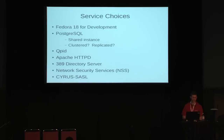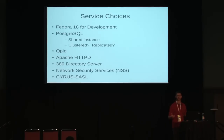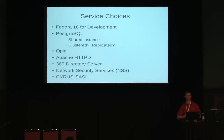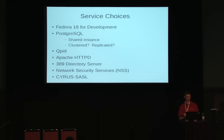The service choices: I do my development on Fedora 18. I'm a Postgres bigot — I like Postgres as a database, and in this case it also happens to be the one that supports Kerberos. I use Qpid as my queue deployment mechanism, because of the SASL and Kerberos support. If possible, and certainly for Keystone, I like Apache as the web server — again, Kerberos support there. The 389 directory server as mentioned before, NSS for cryptography, and then Cyrus SASL libraries — that's what gets you the ability to encrypt on the wire.